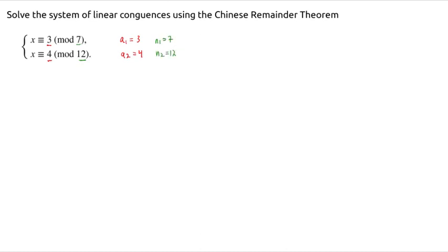In the Chinese Remainder Theorem, our solution is that x is congruent to a1 times n2 times a number y1 plus a2 times n1 times a number y2. I'm going to write blank spots here for y1 and y2.